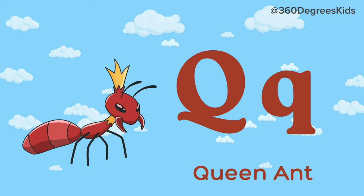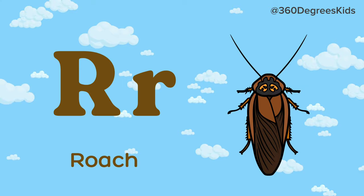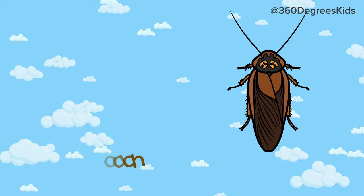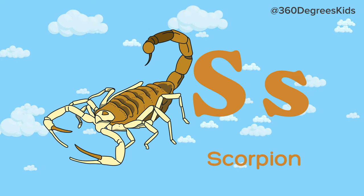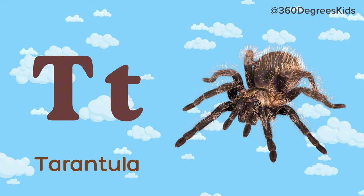Q. Q for Queen Ant. R. R for Roach. S. S for Scorpion. T. T for Tarantula.